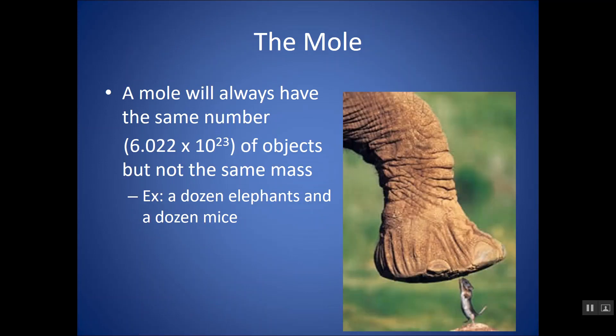A mole will always have the same number of objects, but not the same mass. It would be like a dozen elephants or a dozen mice. A dozen means 12, but if it's a dozen elephants, they wouldn't weigh the same as a dozen mice. Same thing for a mole. A mole always contains the same number, 6.022 × 10^23 of objects, but will have a different mass depending what that object is.